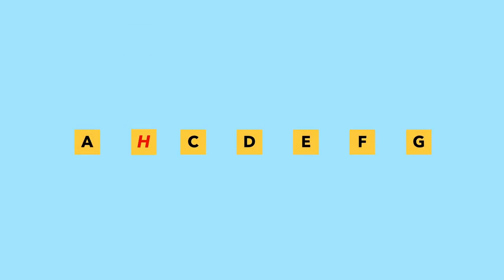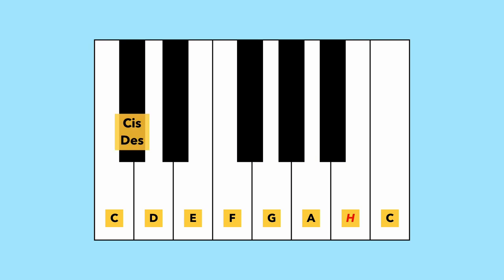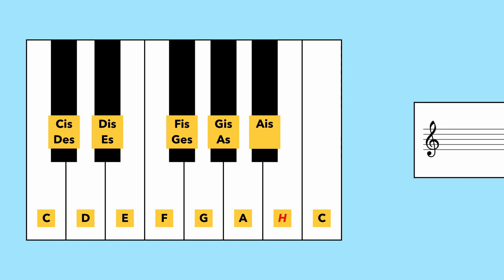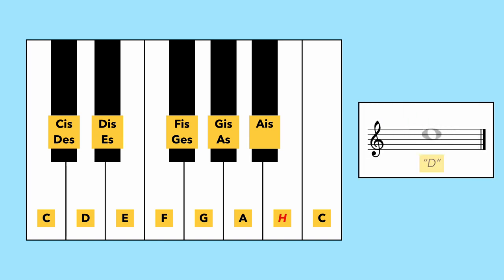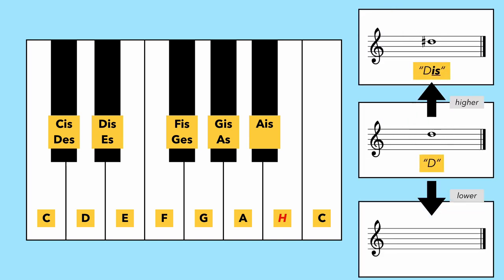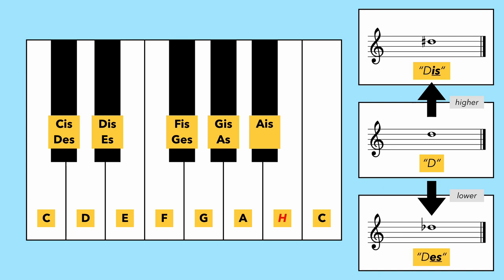In German-speaking countries, Scandinavia, and many Slavic countries, the note between A and C is called H instead of B. Accidental notes take the suffix IS instead of sharp, or ES instead of flat. The natural note D becomes DIS or DES, and so on.